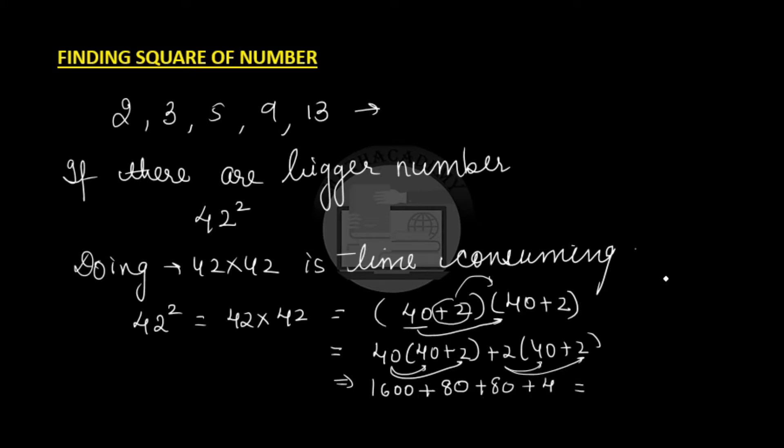When we add all that, we will get 1600 plus 160 plus 4 which gives us 1764, which is the square of 42. So, we can find the square of numbers without actual multiplication by using the law of distribution like this.